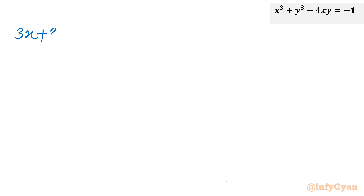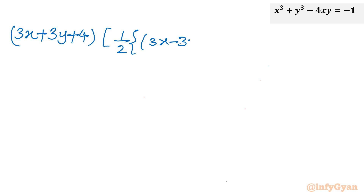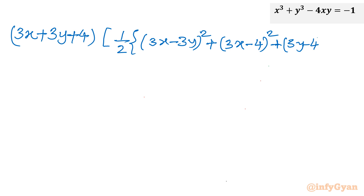Putting in the values, I will write (3x plus 3y plus 4) in the first bracket, and then half times [(3x minus 3y) whole square plus (3x minus 4) whole square plus (3y minus 4) whole square]. The right hand side is 37.